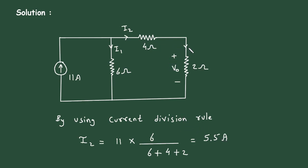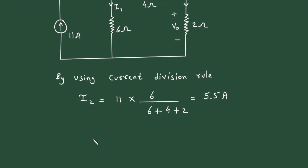We have the value of this current I2. We can find the value of VO. VO is equal to, according to Ohm's law, V equals I times R.